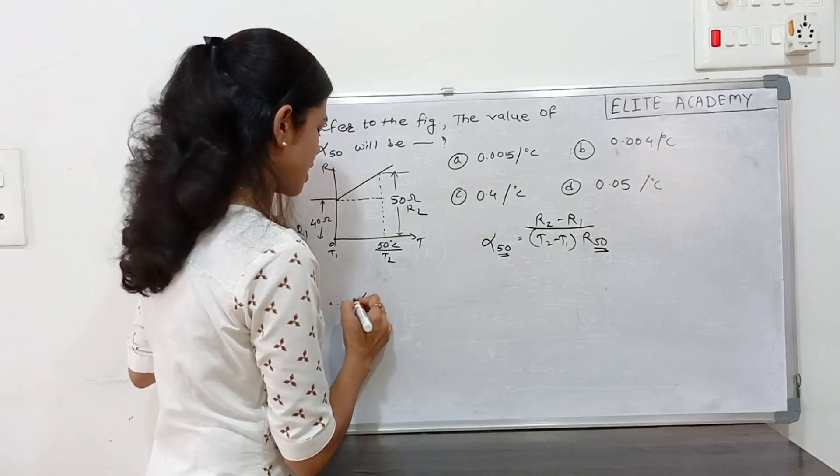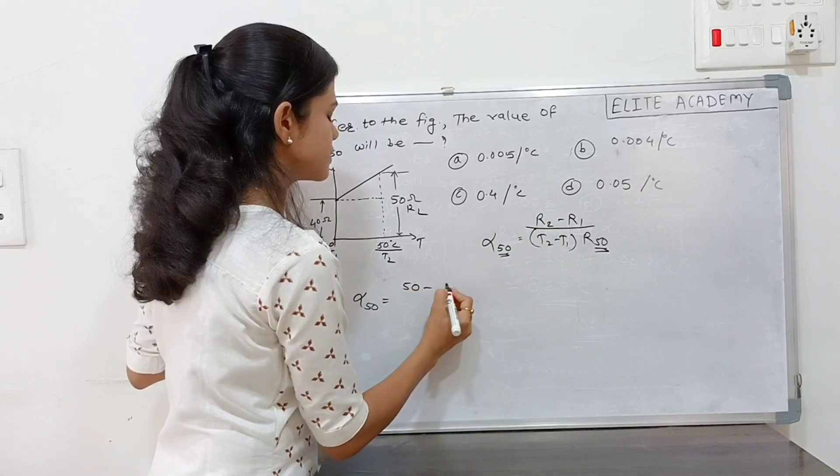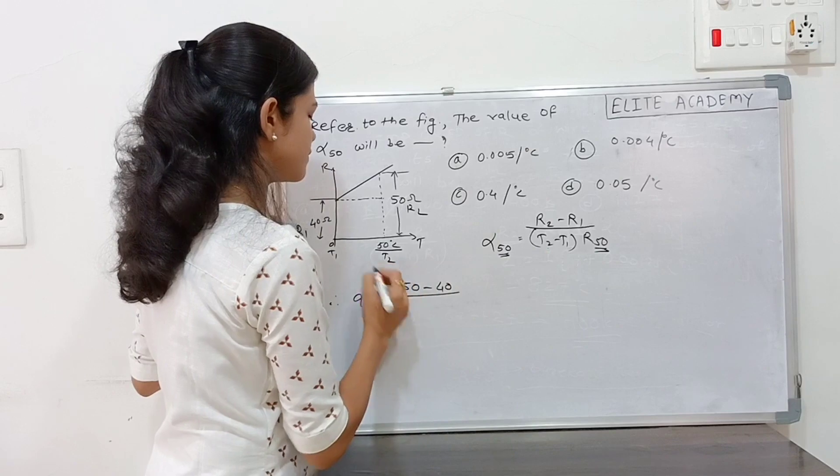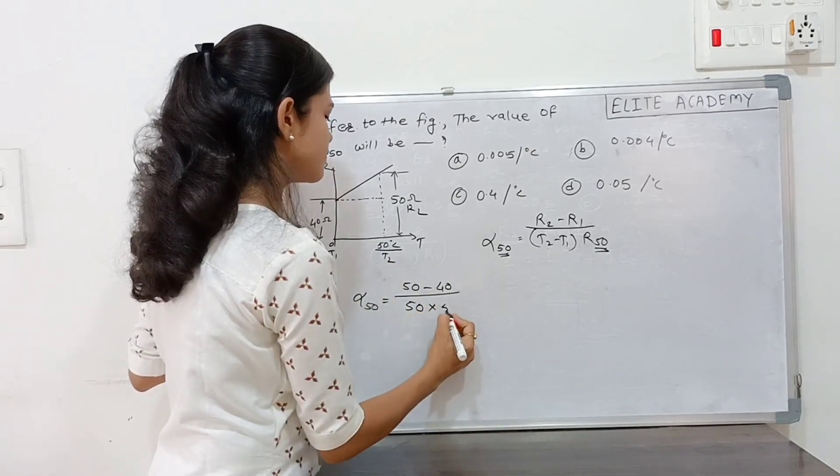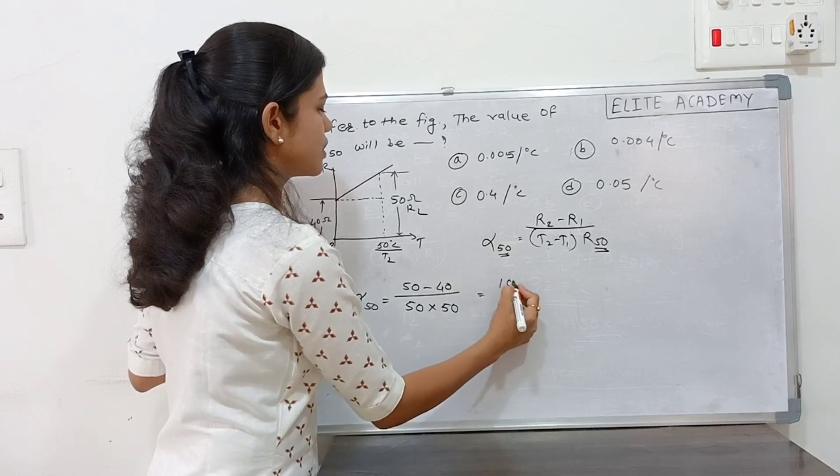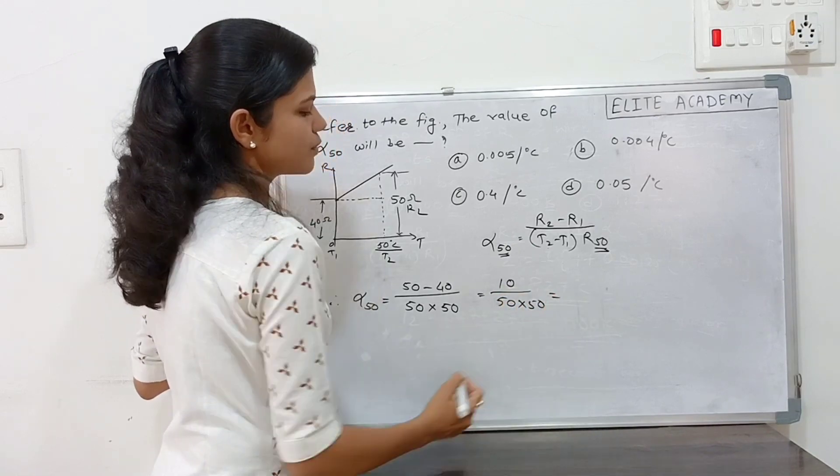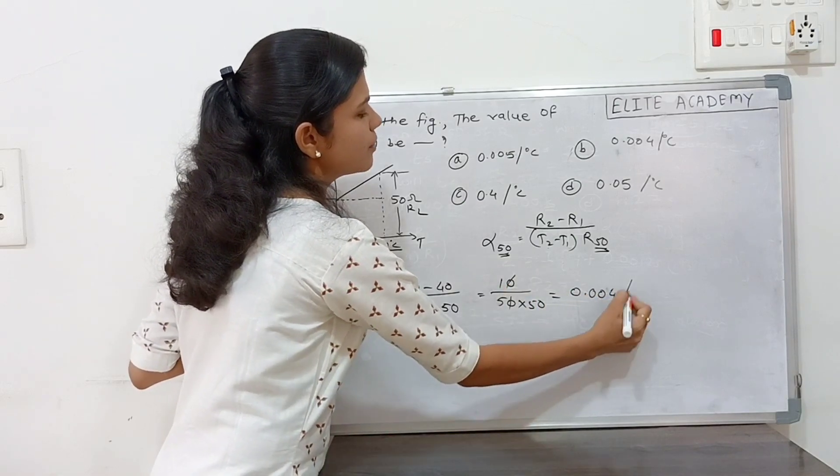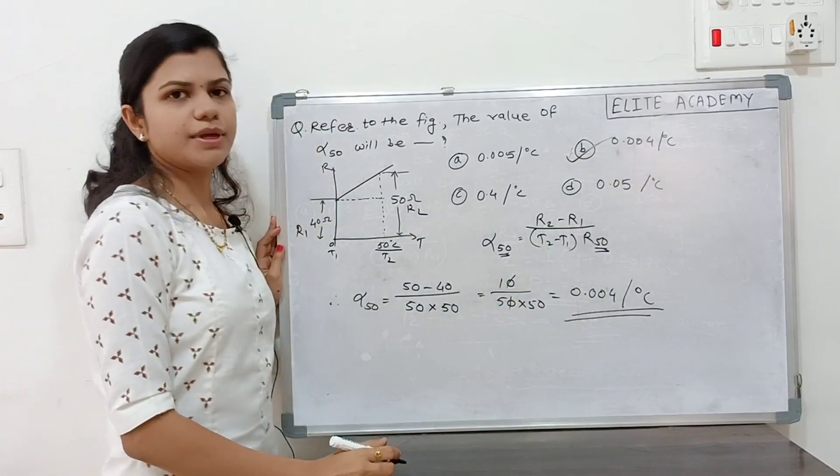Therefore alpha 50 is equal to 50 minus 40 upon T2 minus T1. R50 is 50, so 10 upon 50 into 50 is equals to 0.004 per degree Celsius option number B.